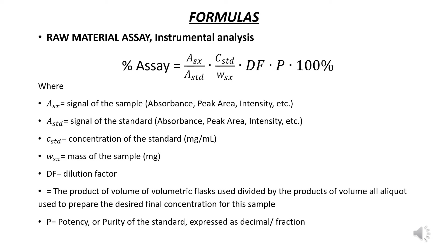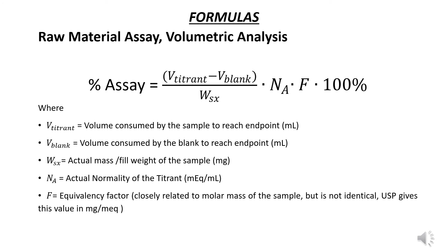For the assay of raw material using volumetric analysis, the assay is as follows. The assay is equal to the difference in the volume consumed for the titrant and blank, multiplied by the normality of the titrant, multiplied by the equivalency factor if applicable, multiplied by 100%. The product is divided by the weight of the sample.